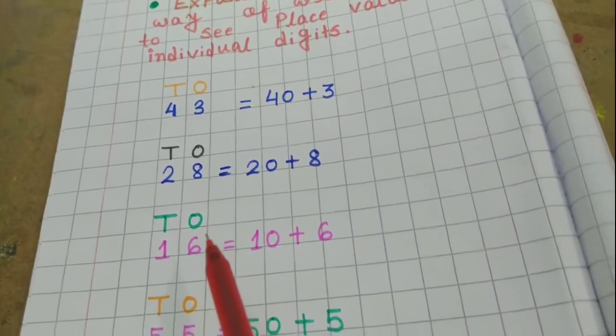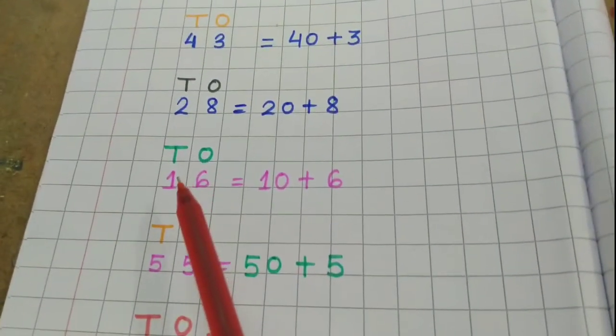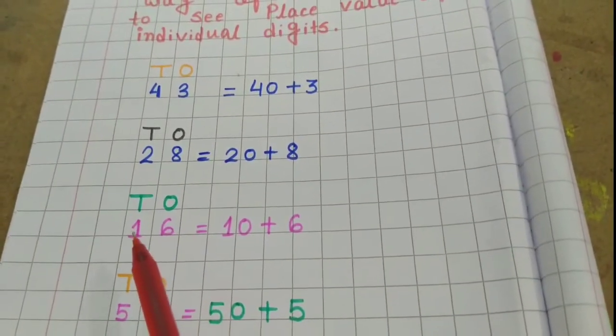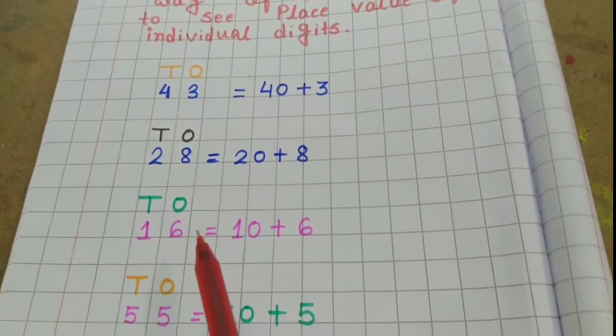Then here also I have written 16. 16 means 1 ten, 6 ones. So, 10 plus 6.